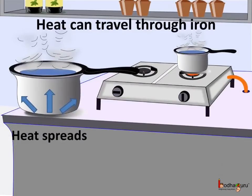Now, if we put an iron pot on an oven or a gas stove, soon the whole pot becomes hot. But if you see, the flame is touching very little part of the pot. Then how come the whole pot is hot? It means the heat which the pot gets from the flame has spread in the pot. So the heat can travel through solids.